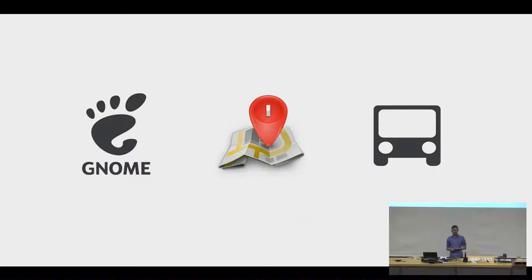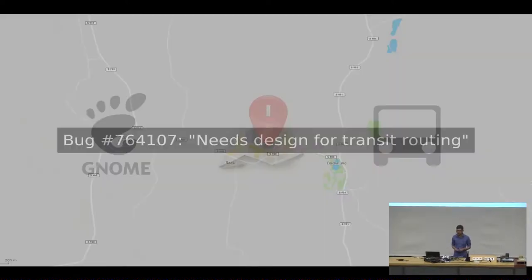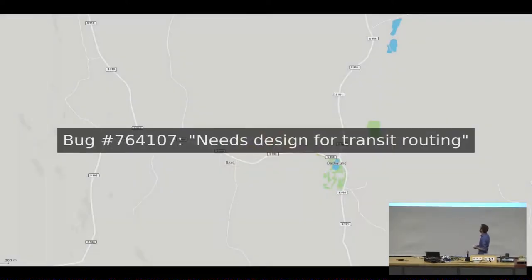So it started with Markus Lundblad, a GNOME maps developer who filed this bug where he said he needed a design for public transportation because GNOME maps already had support for getting from point A to B by walking, by biking, and by taking a car. But he wanted to add a fourth method, which was using public transportation.